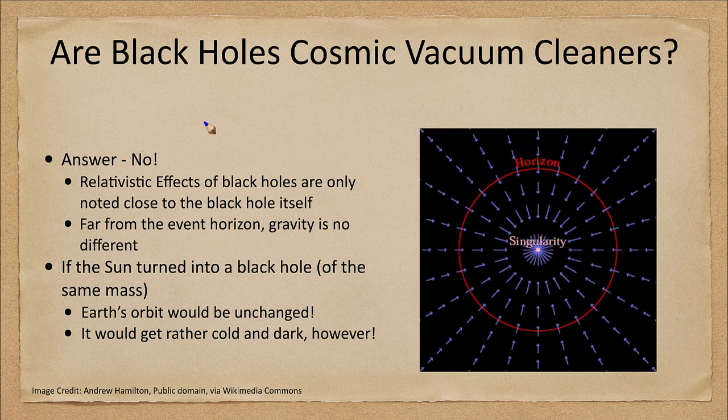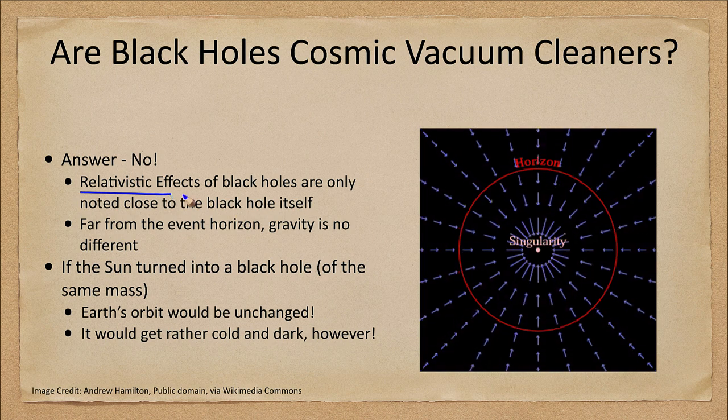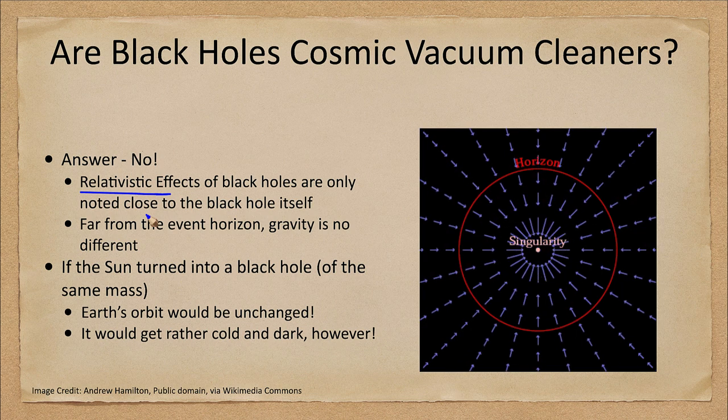A black hole is a very compact mass in space—a lot of material compressed into a very small amount of space. But the extreme relativistic effects of a black hole are only noted close to the black hole. Only when you get close to the black hole, we have what we call the event horizon.